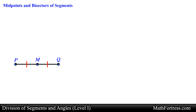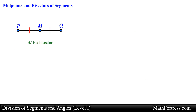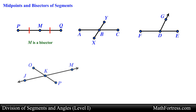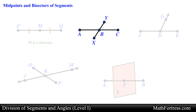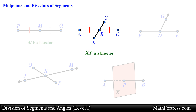A point is not the only figure that can bisect a segment. In fact, another segment, ray, line, or plane can also bisect a segment. For example, in the following figure segment XY bisects segment AC at point B. We can conclude that point B is the midpoint of segment AC and that segment AB is congruent to segment BC.